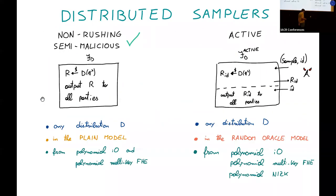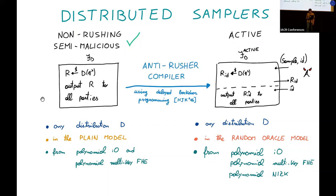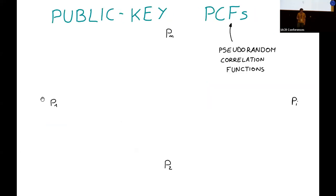So this is our semi-malicious construction. To upgrade it to active security, we designed a compiler called the anti-rusher compiler that takes a one-round protocol that is semi-malicious in the plain model and compiles it into an actively secure protocol that still has one round in the random oracle model. The trick at the base of this compiler is the delayed vector programming technique by Hofheinz et al. Using it, we obtain an actively secure distributed sampler.